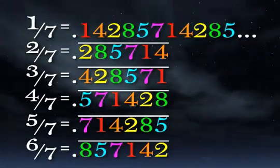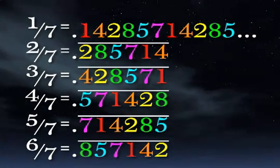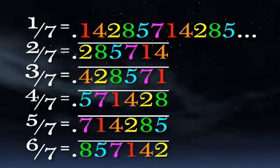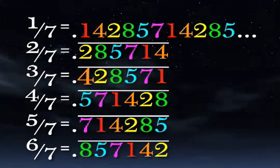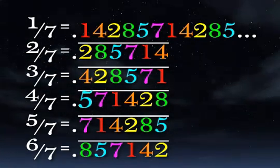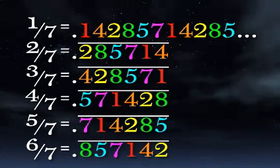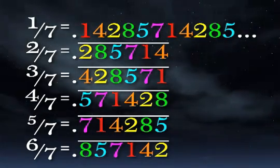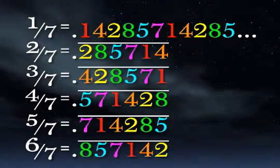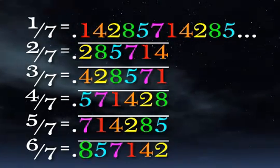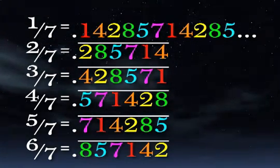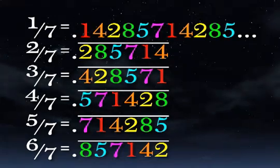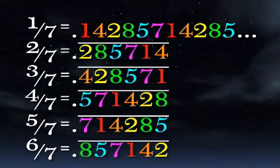1 seventh starts on 1. 2 sevenths starts on 2. 3 sevenths starts on 4. And 4 sevenths starts on 5. So those are a plus 1. And the last two are a plus 2. 5 sevenths starts on 7. And 6 sevenths starts on 8. So learn the sequence as well as how to figure out where to start the sequence. And that's all there is to that.